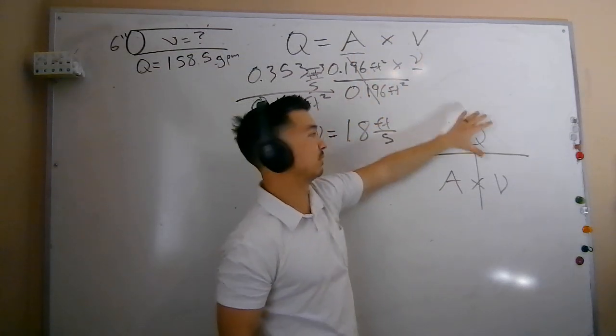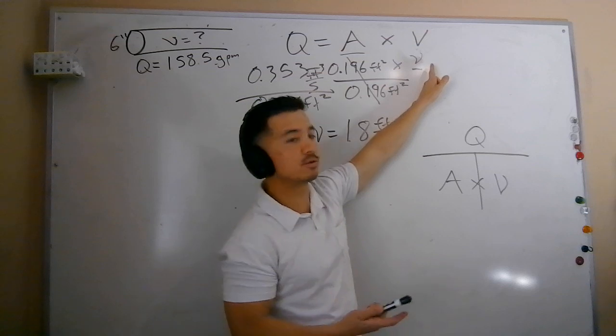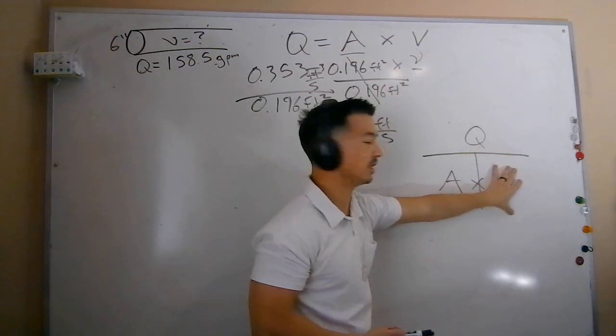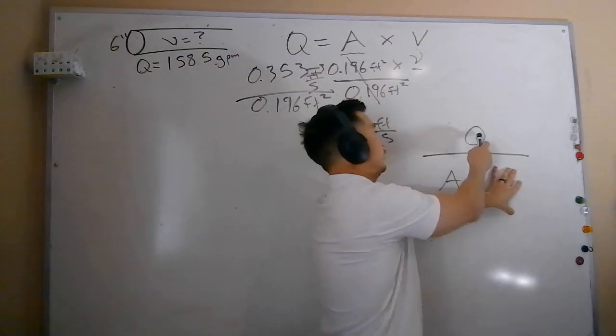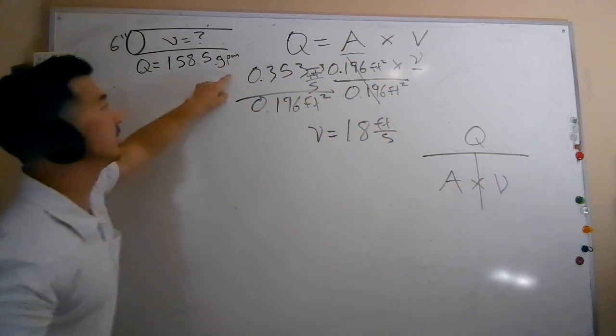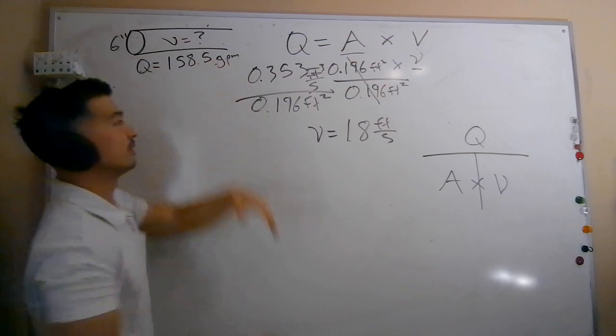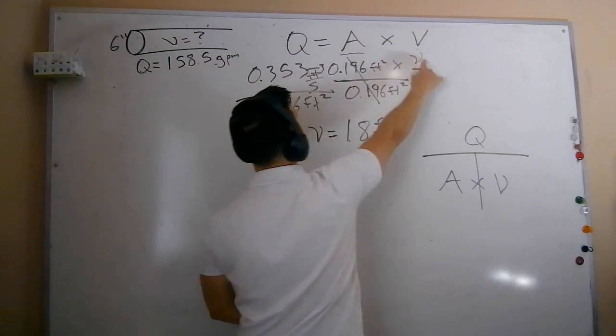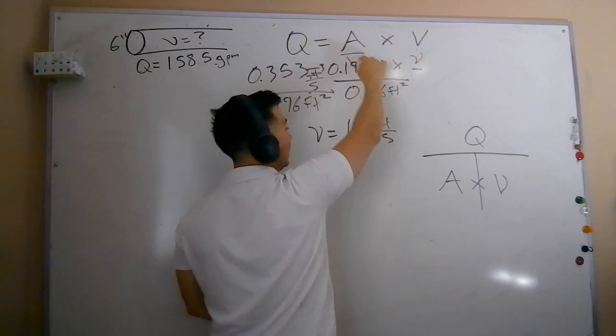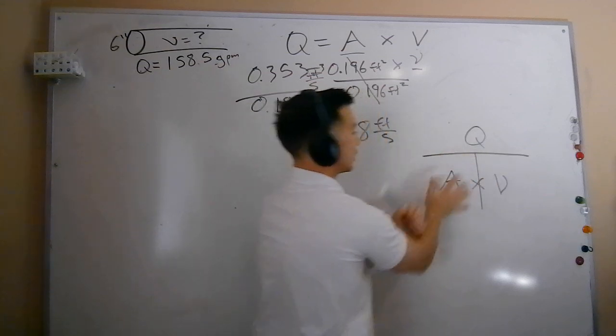In the case here, we didn't have V. So what we can do is we can cover up velocity here, and what do we have? We have Q divided by area, which is exactly what we did over here, flow divided by area. If I was doing it the other way around, and let's say I had velocity, I had Q but did not have area, I would cover up area, and the way to solve for that is Q divided by velocity.